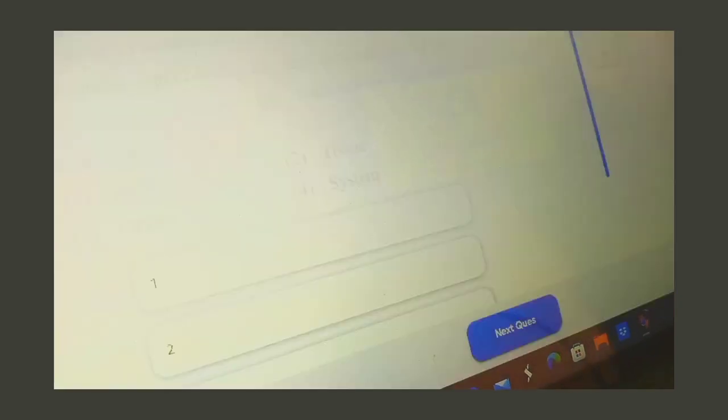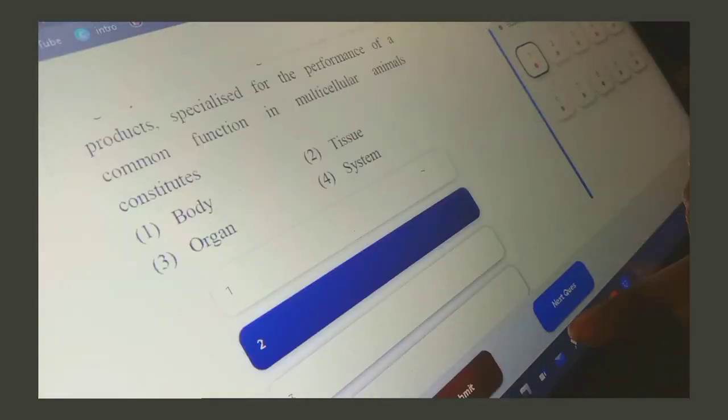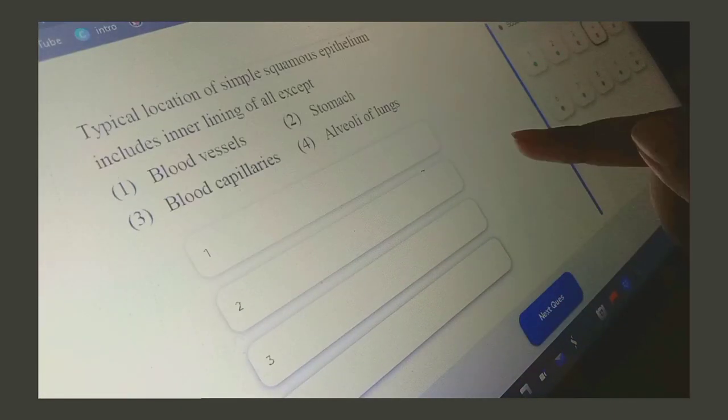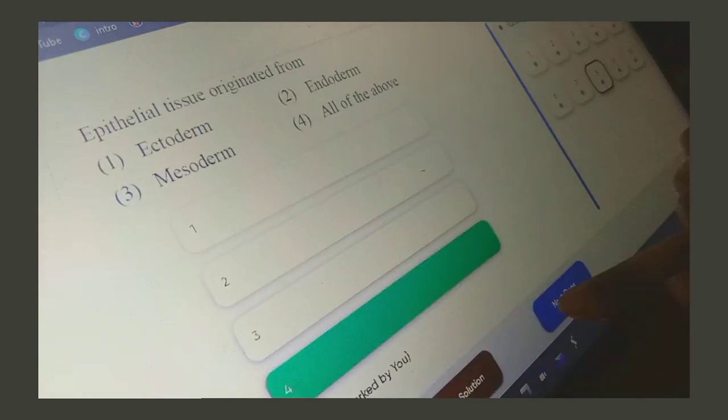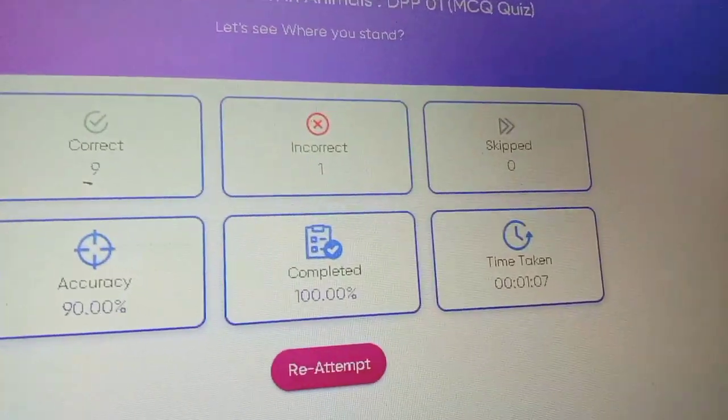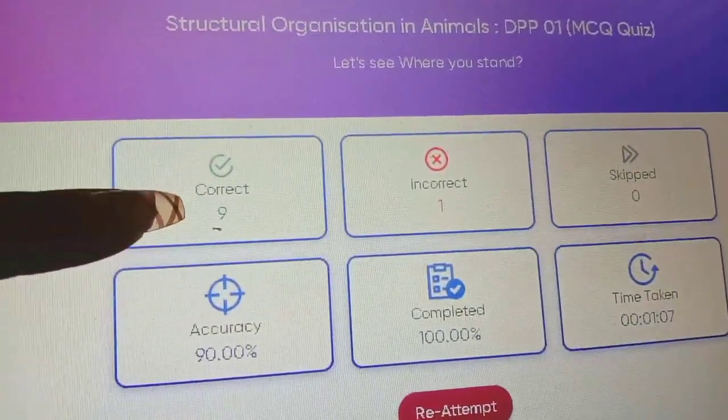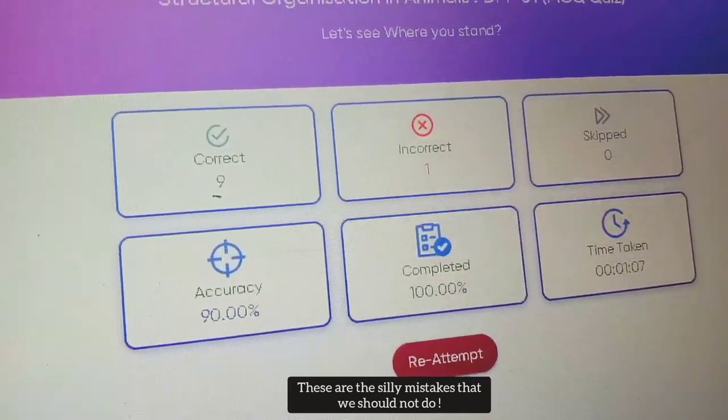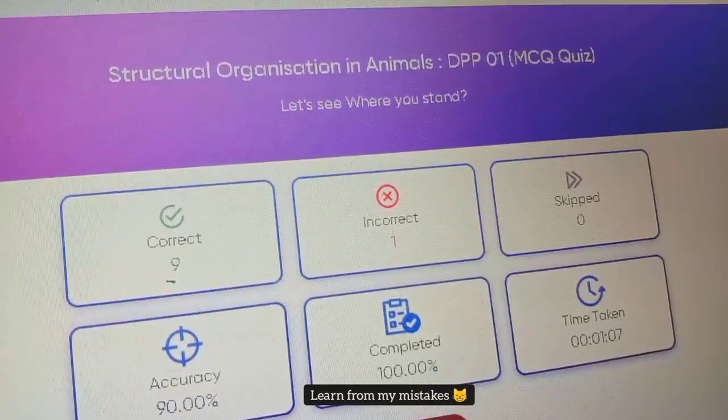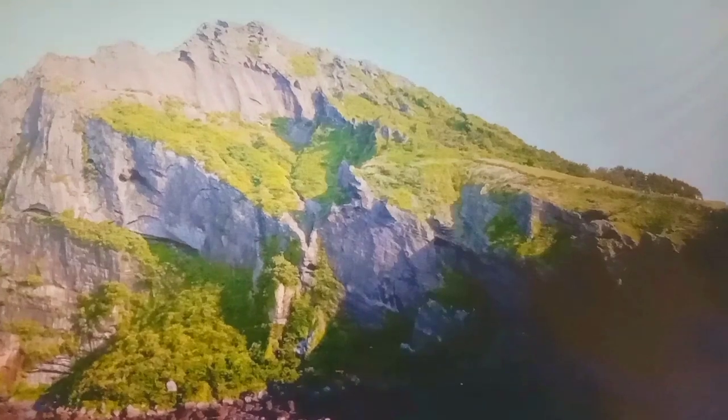So I'm done with the notes right now and now I'm going to solve the DPP. There were just 10 questions so that's why I decided to solve it in DPP format. This is good because I don't have to check my answers. So this is my score - I scored 9 out of 10. In the last question instead of columnar I just clicked on cuboidal in a hurry.